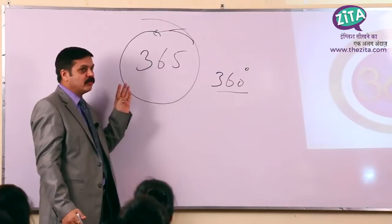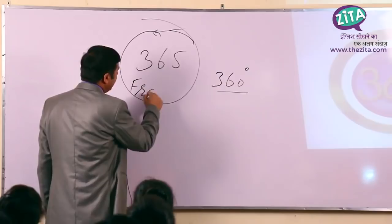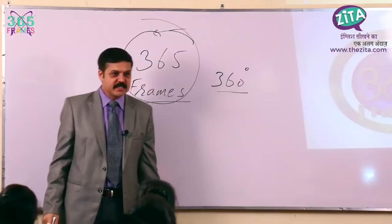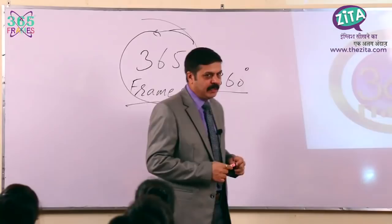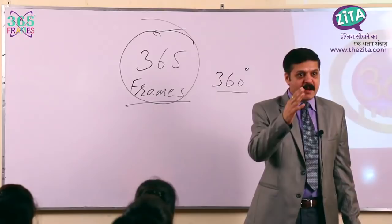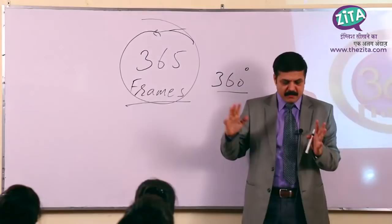And it is not 365 degree alone — it is 365 degree frames. So we don't call it 365 degree only, it is 365 degree frames. Frames means what? Generally, in photography, we call frames as pictures. Frames के माने क्या होते? Pictures. And when I mentioned the 5 degrees, that was it — frames.